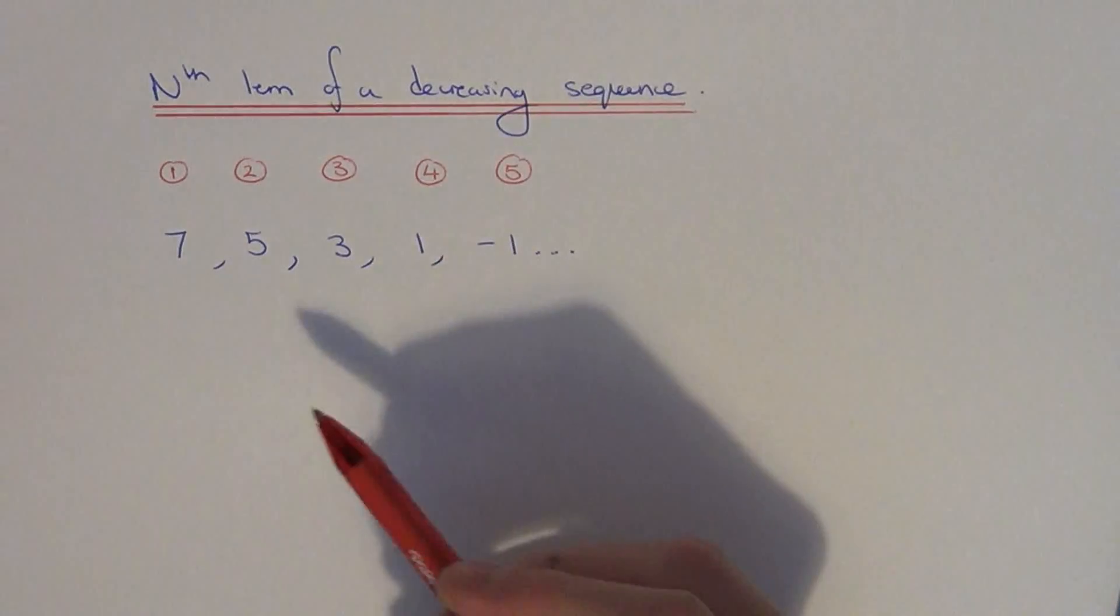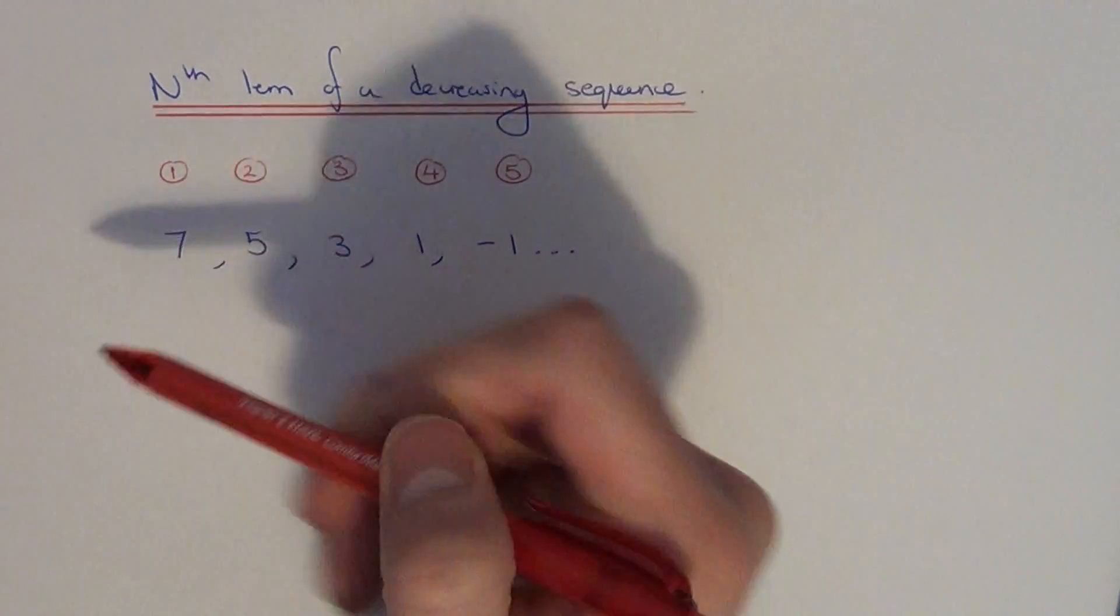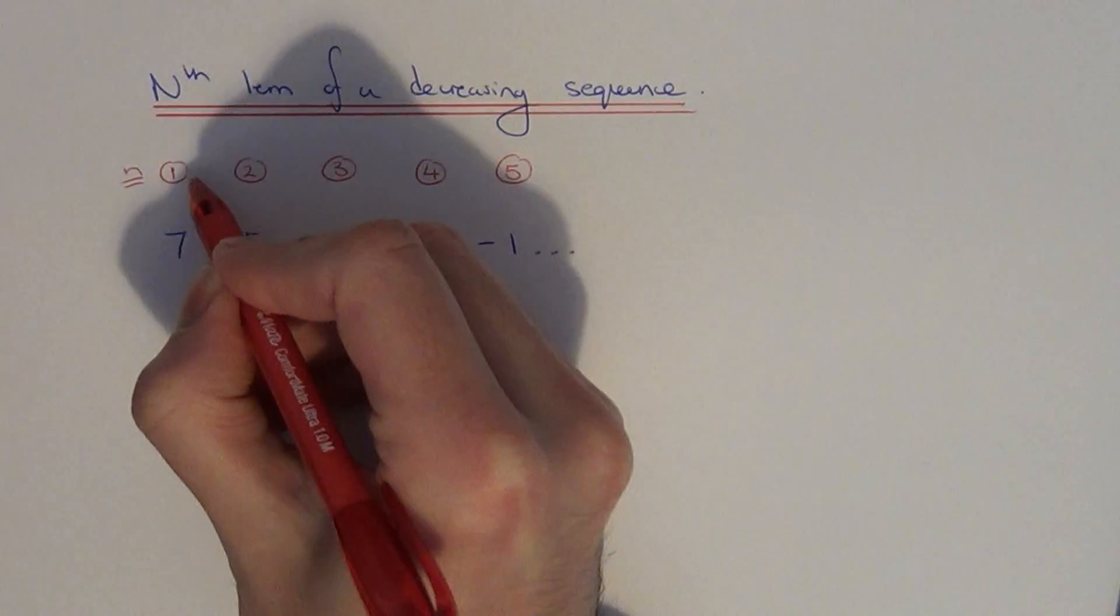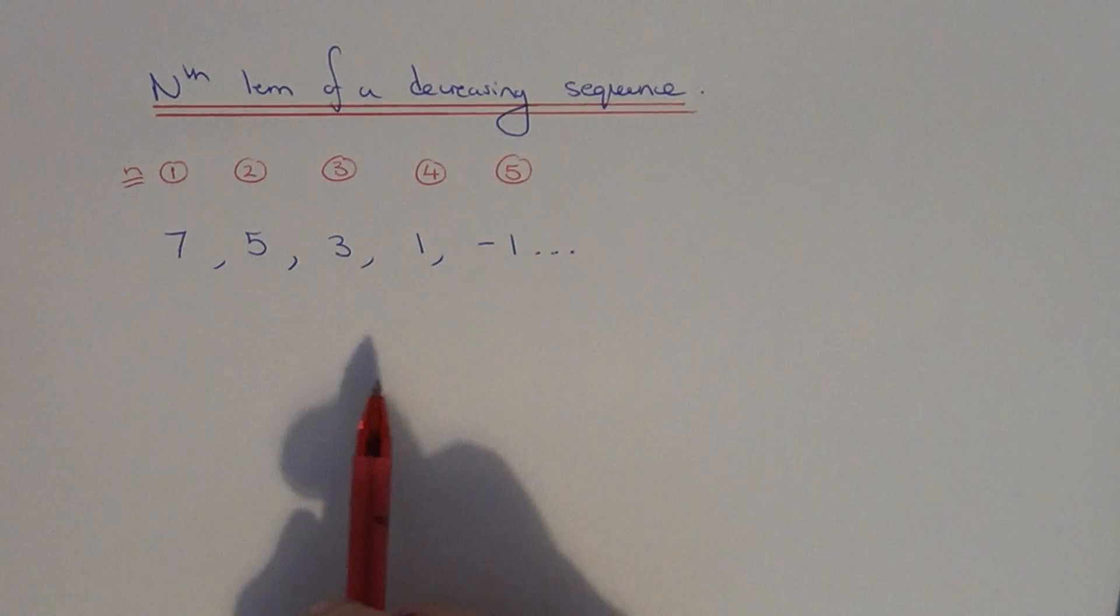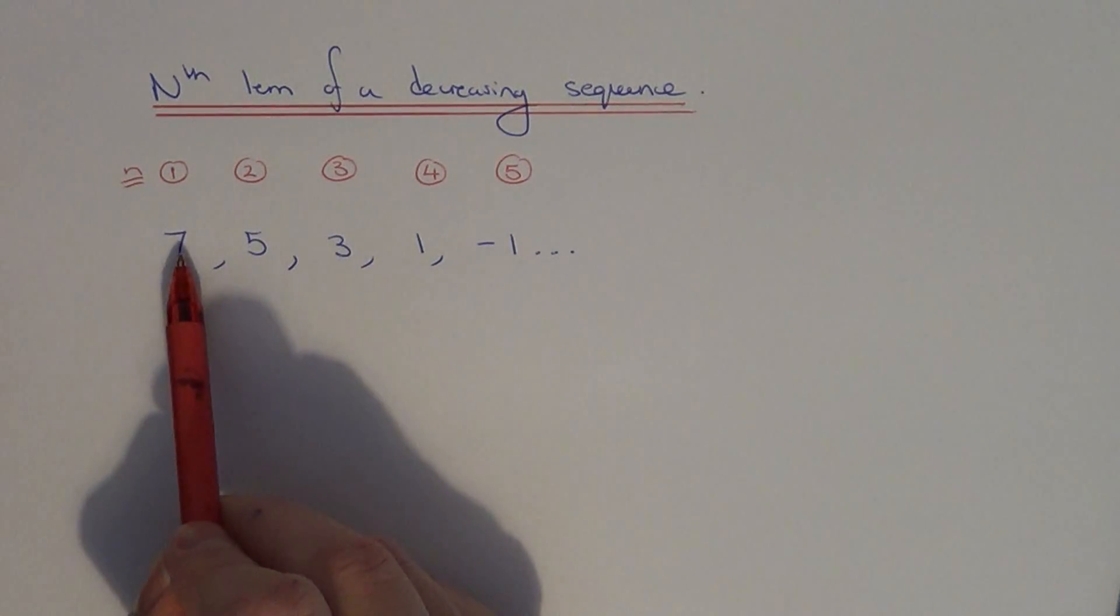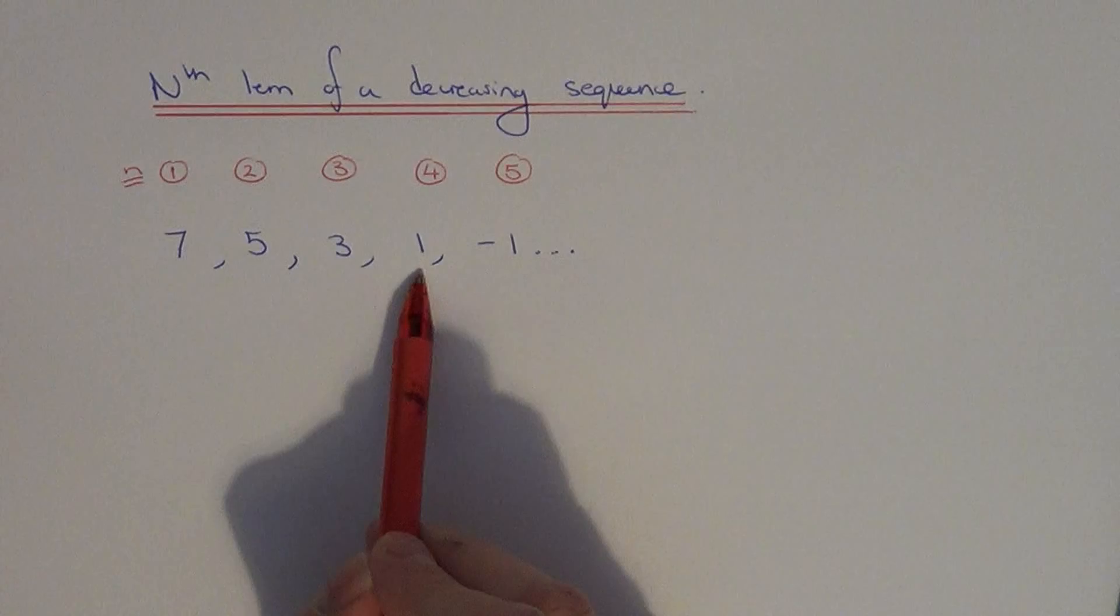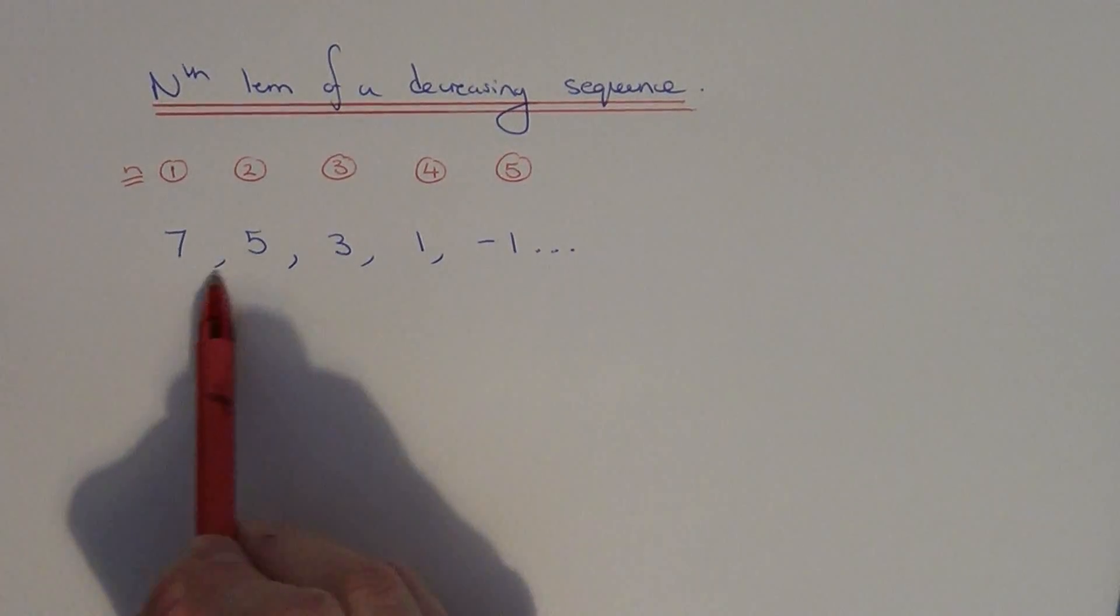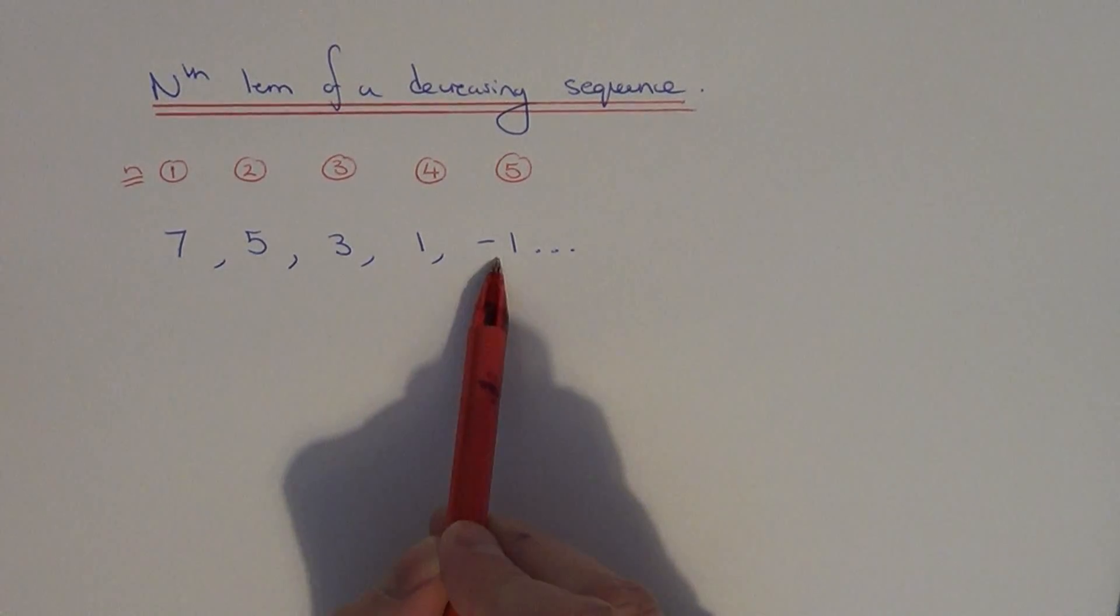So remember, what we're trying to do is look for a rule which takes us from these position numbers to the numbers in the sequence. To do this, first of all figure out what the sequence is decreasing by. As you can see, it's going down in 2's.